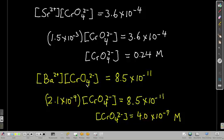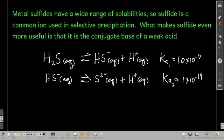So we could easily separate these two ions this way. Now metal sulfides, they have a really wide range of KSPs, and that's one of the reasons why sulfide is often used in selective precipitation, to precipitate metals. What makes it even more useful is that sulfide is the conjugate base of a weak acid.